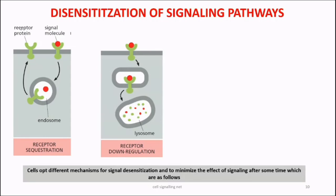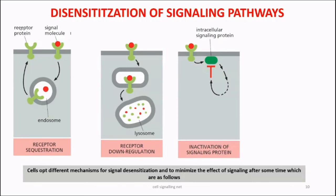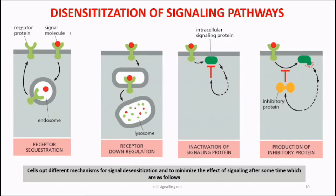The second mechanism, where both ligand and receptor are destroyed in the lysosome, is known as receptor down-regulation because it decreases the concentration of receptors on the cell surface. The third mechanism involves intracellular signaling proteins activating other proteins that directly inhibit the major intracellular signaling pathways. This can be direct or involve a set of inhibitory proteins specific to that signaling pathway. These four modes — receptor sequestering, receptor down-regulation, inactivation of the signaling pathway itself, and production of inhibitory proteins — are used in desensitization of signaling pathways.